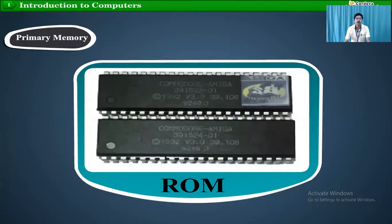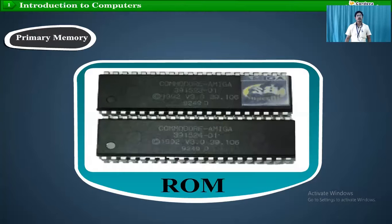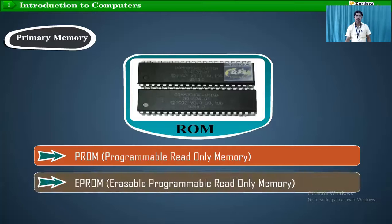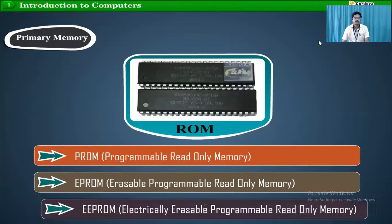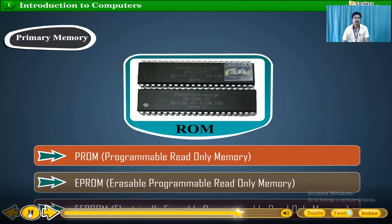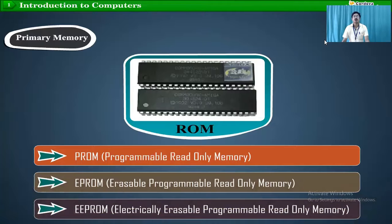ROM stands for read-only memory. It holds the instructions given by the manufacturer to operate the computer. It is a permanent memory. There are three types of ROM: PROM — programmable read-only memory; EPROM — erasable programmable read-only memory; and EEPROM — electrically erasable programmable read-only memory.